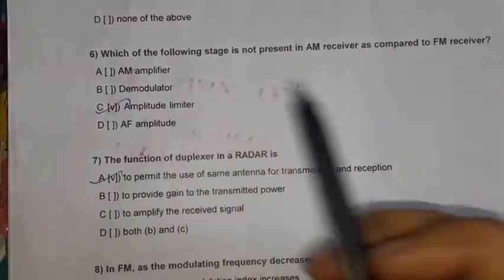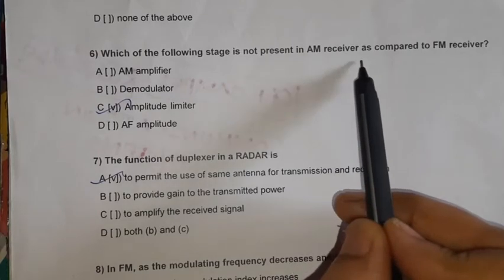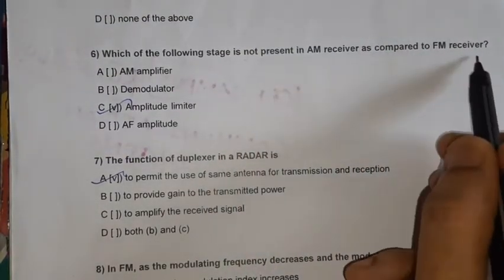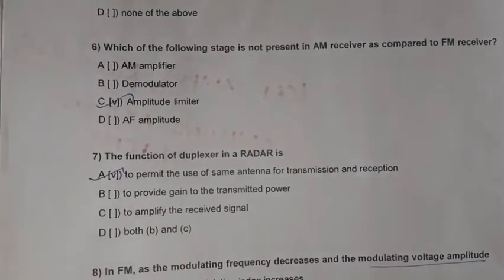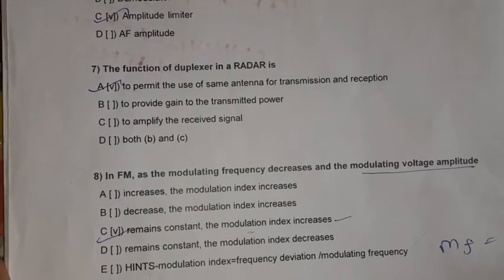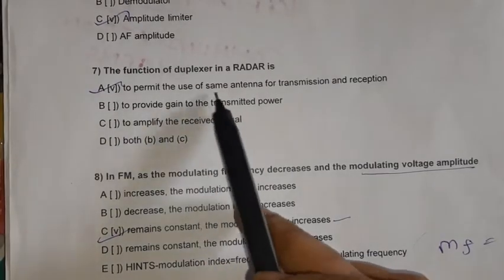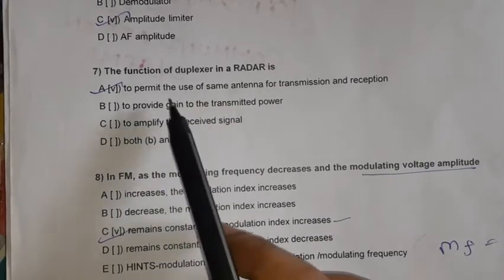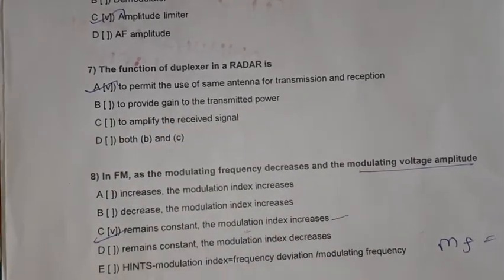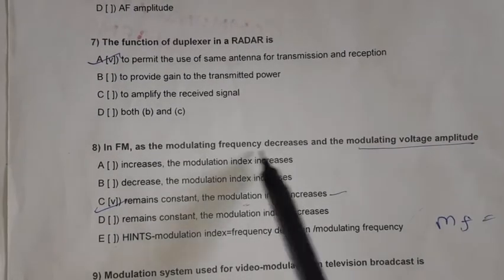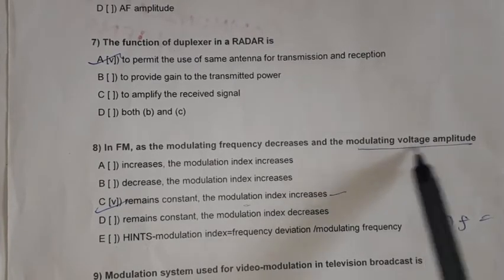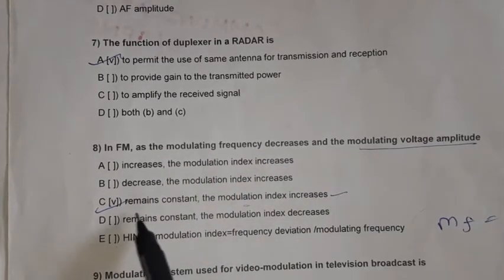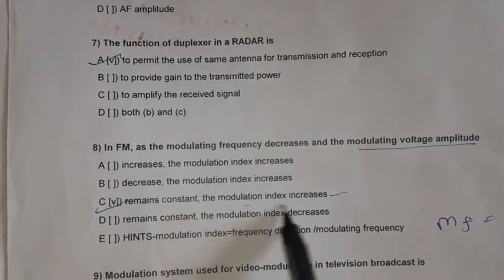Question 6: Which of the following stages is not present in an AM receiver as compared to an FM receiver? The answer is amplitude limiter — it is not present in an AM receiver. Question 7: The function of a duplexer in a radar is to permit the use of the same antenna for transmission and reception. Question 8: In FM, as the modulating frequency decreases, the modulating voltage amplitude remains constant but the modulation index increases.